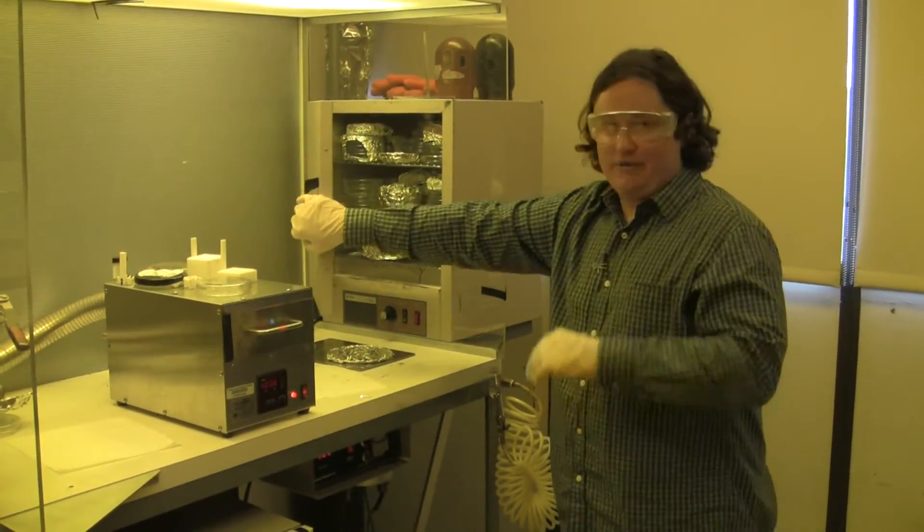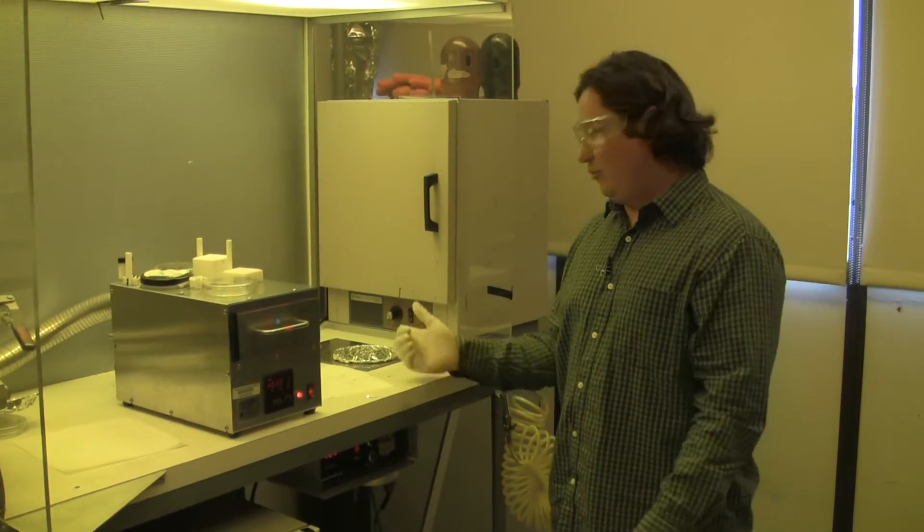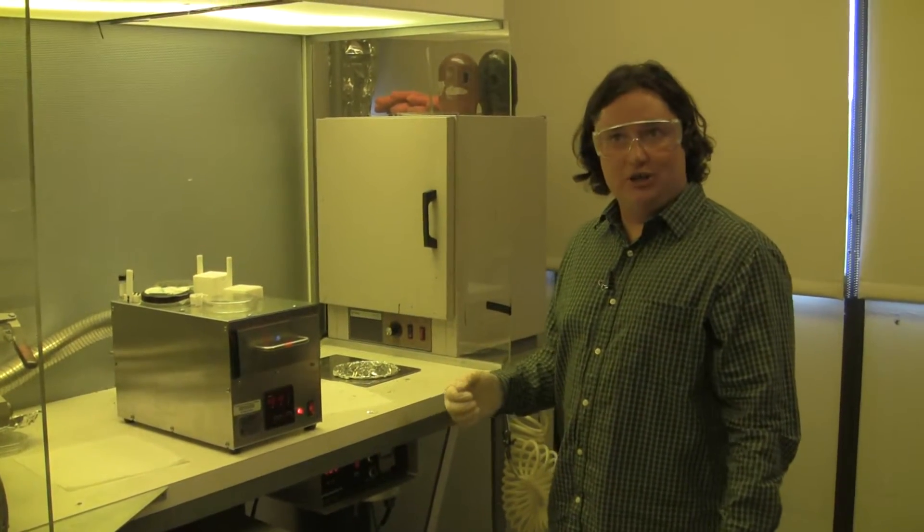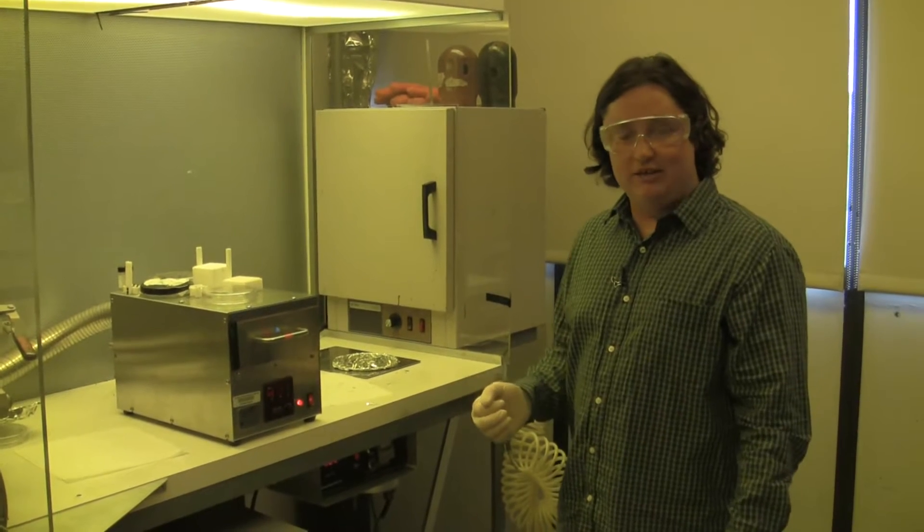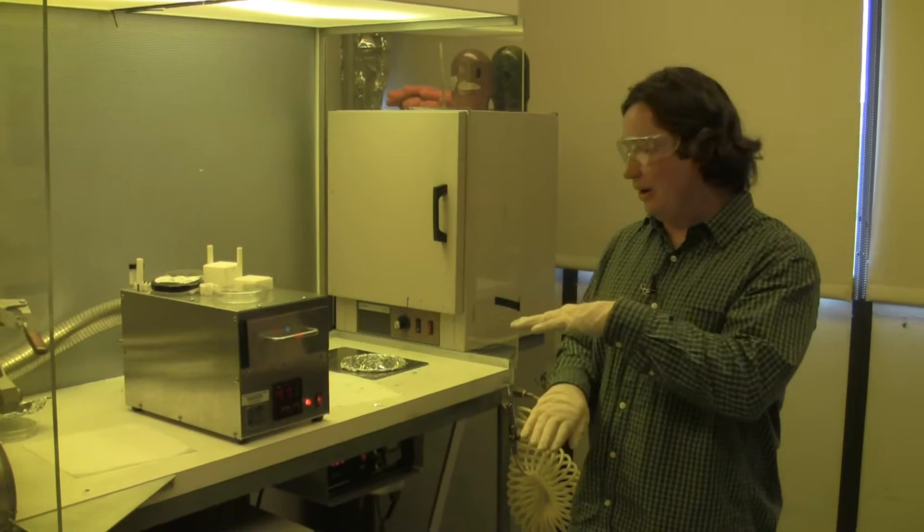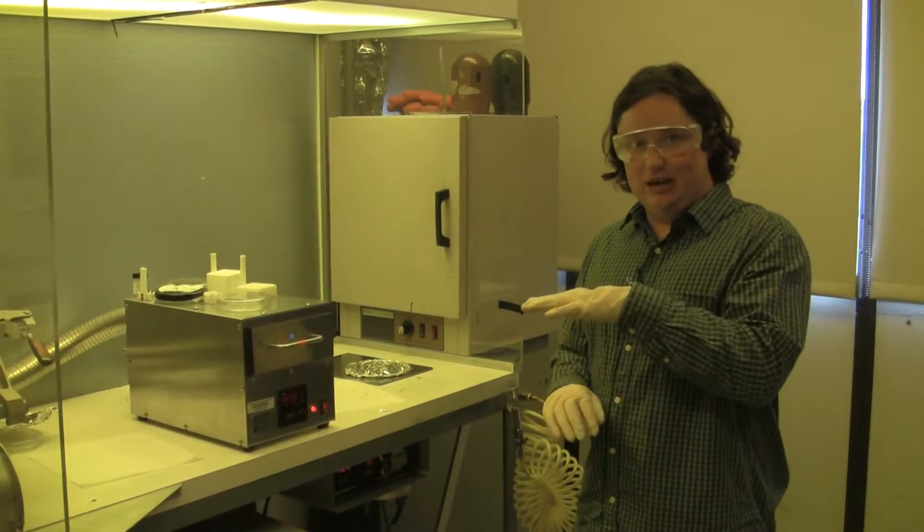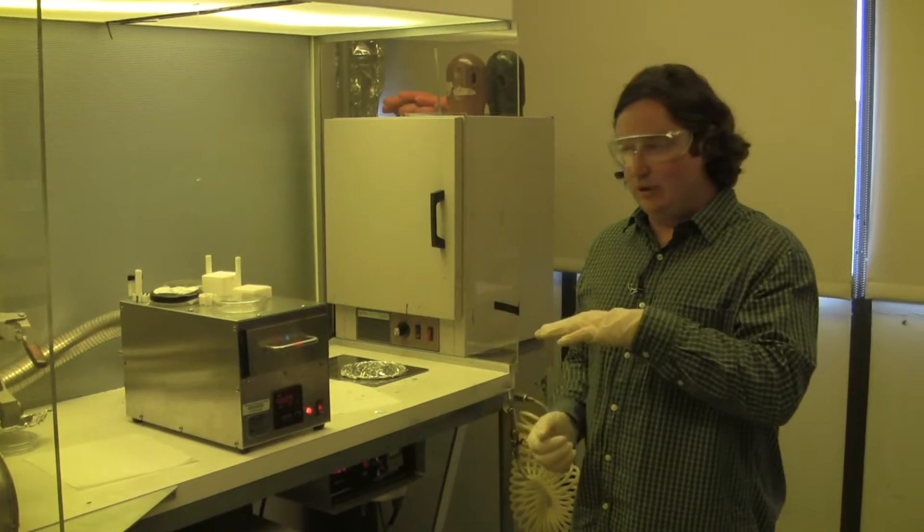We take the substrates out of this oven and put them onto a spin coater where we apply a layer of P-dot, or polyethylene dioxythiophene, which acts as a P-type organic buffer layer between the transparent conducting oxide and the semiconductor that we will add next.